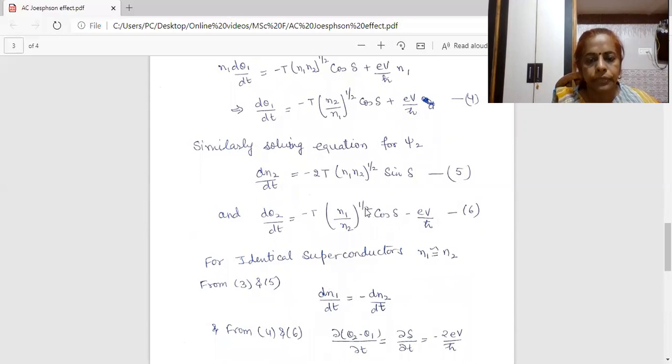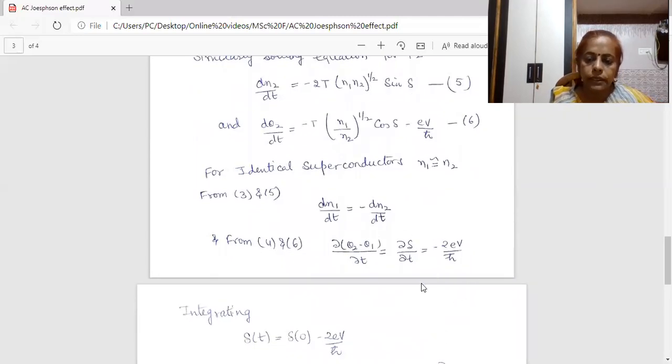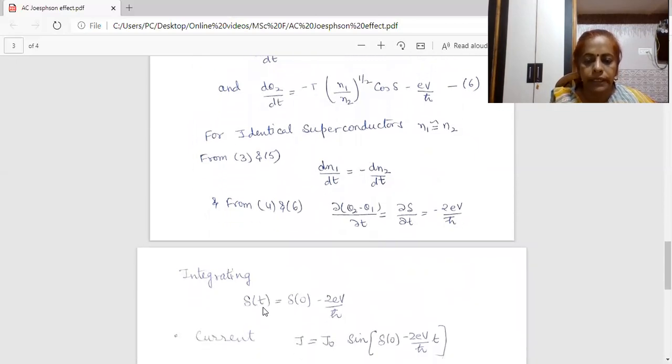Now, from these two expressions, 4th and 6th, we can show that dθ₂/dt minus dθ₁/dt, which is equal to partial differential of δ with t, this is equal to minus 2eV/ℏ. Since from this expression, the phase difference δ depends upon t, I am integrating it with respect to t, I get δ(t) equal to δ at time t equal to 0 minus 2eV/ℏ t.